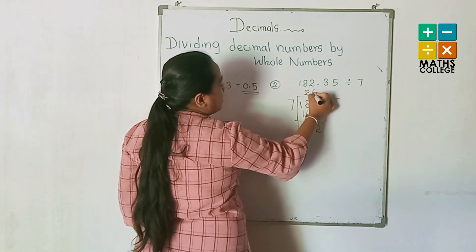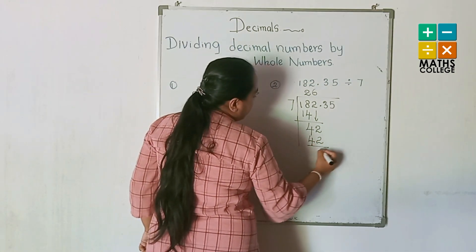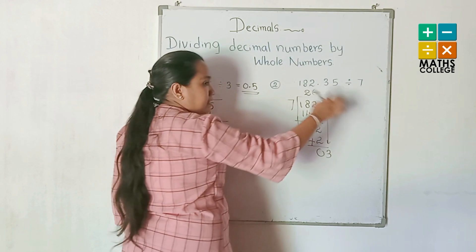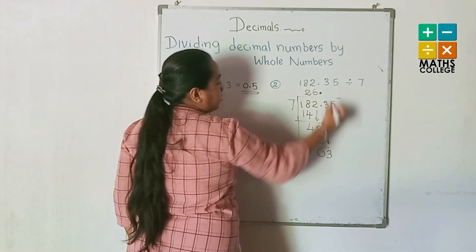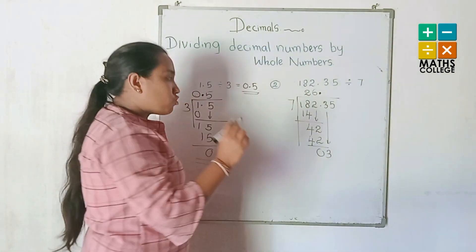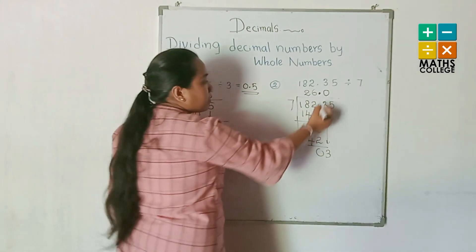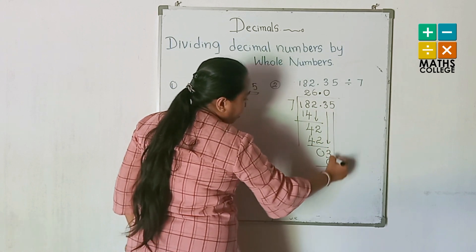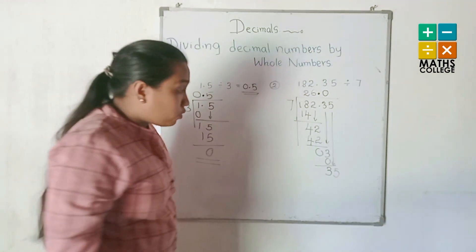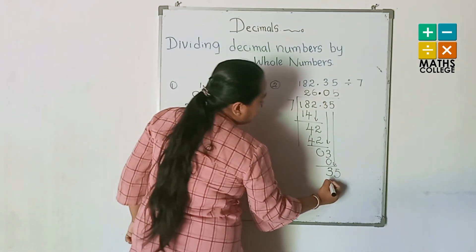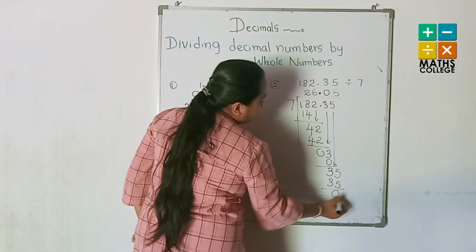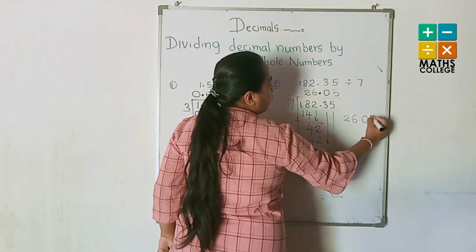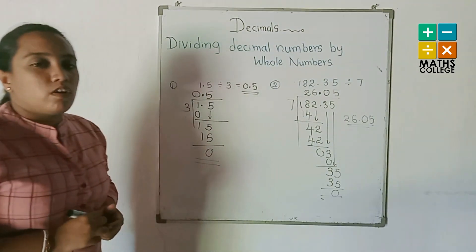42 — how many 7s? Six 7s. Write 6. 6 multiplied by 7 is 42, remainder 0. Bring down the 3 — this is the decimal part, so put the decimal point in the answer. 3 — no 7s, write 0. Bring down the 5: 35 — five 7s. 5 multiplied by 7 is 35, remainder 0. The answer is 26.05.